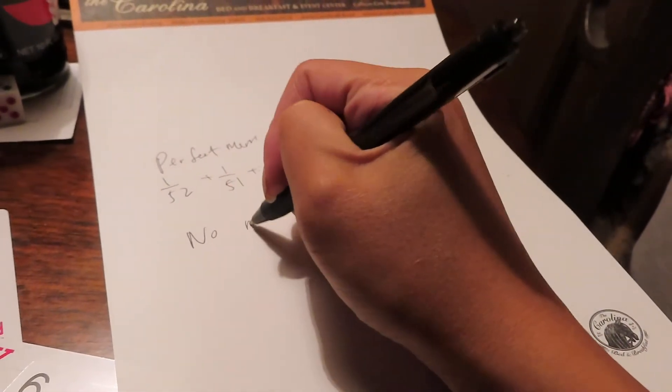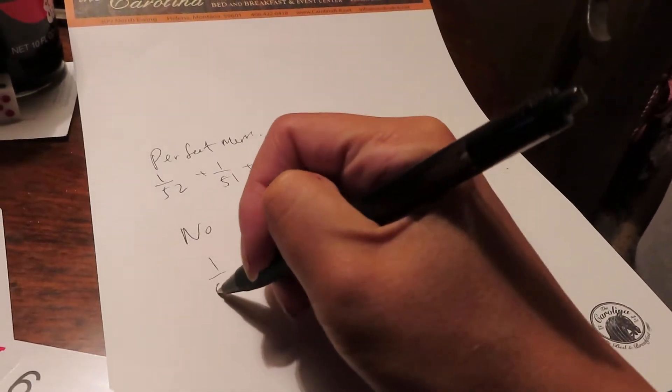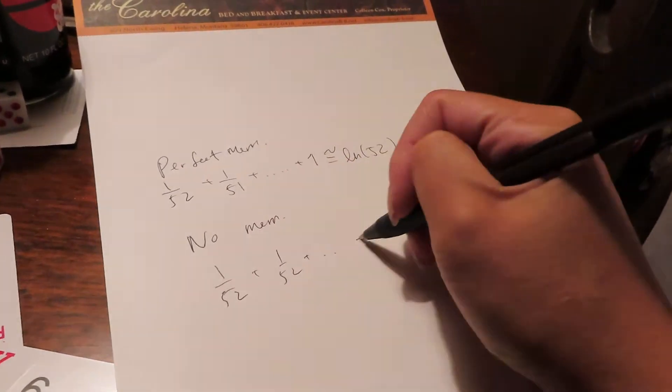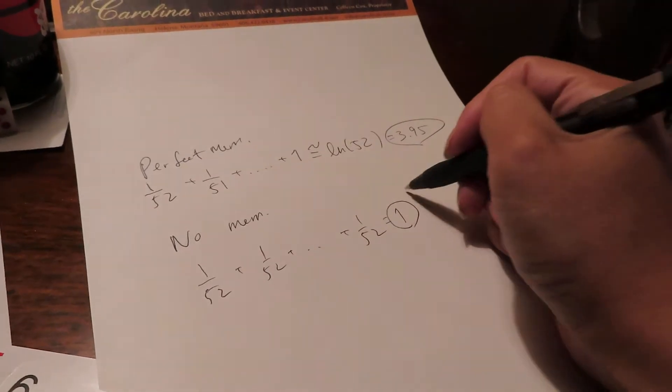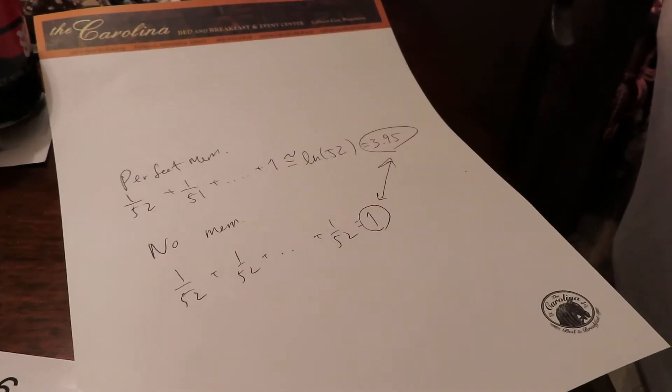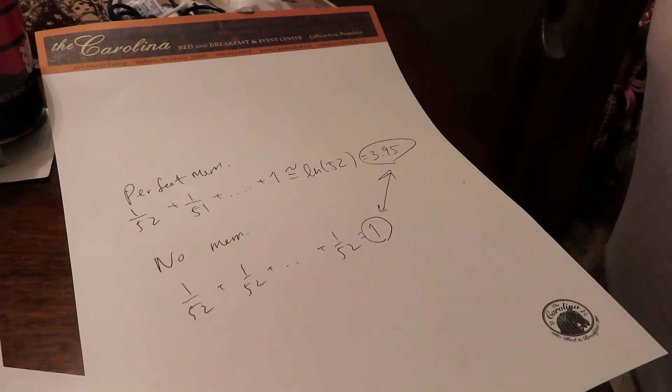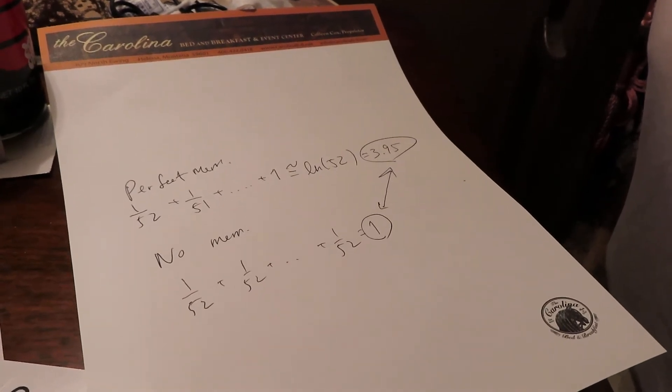If you had no memory at all, you would just have 1 over 52 plus 1 over 52 all the way for each card, which would equal 1, right? So hopefully your score is going to be somewhere in between those two numbers, right? And that would be a good indicator of how good of a memory you had, right?